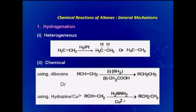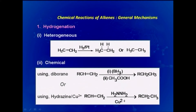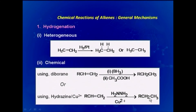In the presence of a metal catalyst this is termed heterogeneous catalysis. It may also be chemical hydrogenation, in which we use diborane as a reagent — diborane exists as B2H6, but in organic reactions we represent it as BH3. This leads to the hydrogenated product. Another method of chemical hydrogenation uses hydrazine with cupric ions, again giving the hydrogenated alkane.